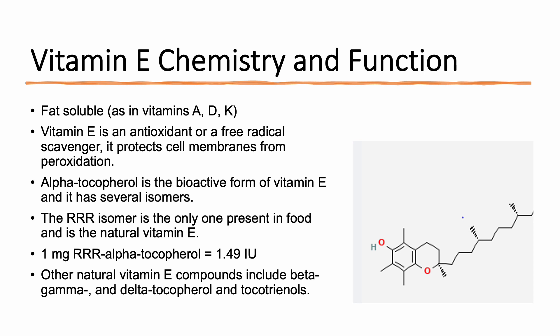There are many other natural vitamin E compounds, including beta, gamma, and delta-tocopherol, and also the tocotrienols, which have alpha, beta, gamma, and delta forms.